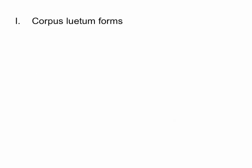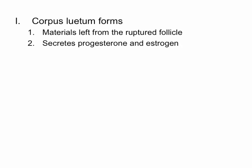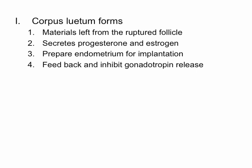What's left of the follicle after the oocyte is released is called the corpus luteum. These are the materials left from the ruptured follicle. The corpus luteum plays a role in the ovarian cycle — it secretes progesterone and estrogen. This prepares the endometrium for implantation of an embryo. It also feeds back and inhibits further gonadotropin release.